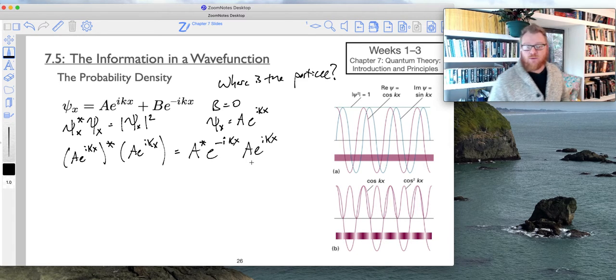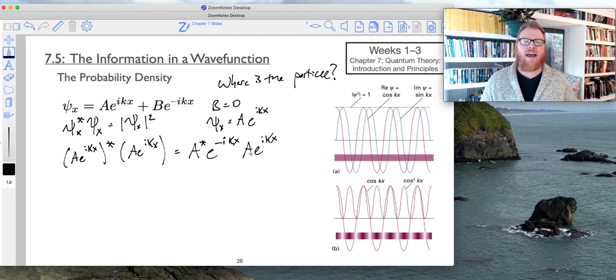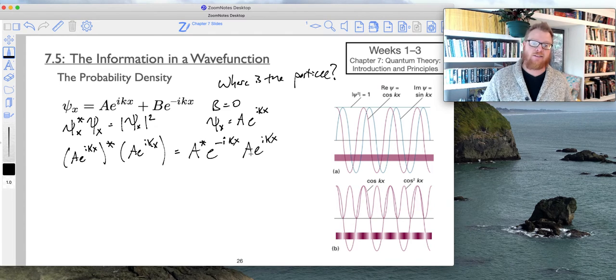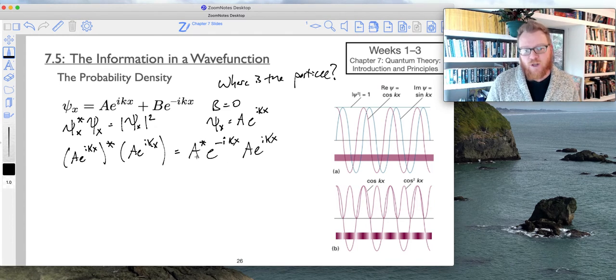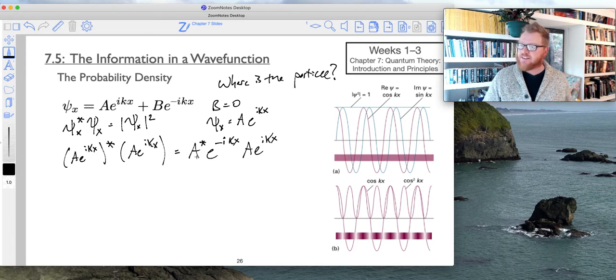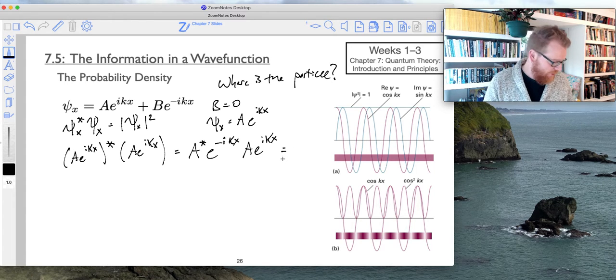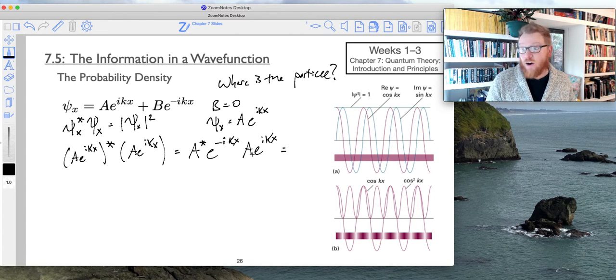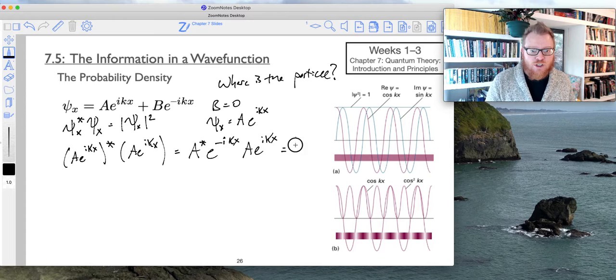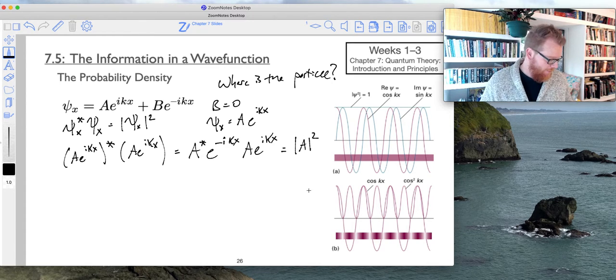Well, what do I get out of this? Well, e to the negative i k x times e to the i k x is one. And we know that that a has to be a real number. It's a constant. So this just turns out to be a star a, which I will just write as the square modulus of a.